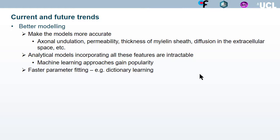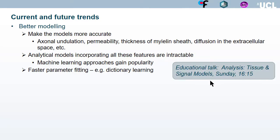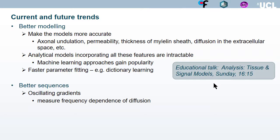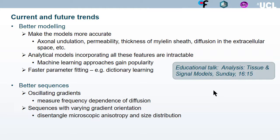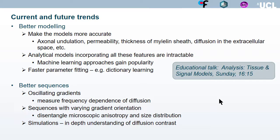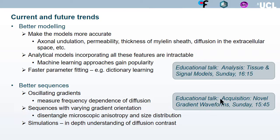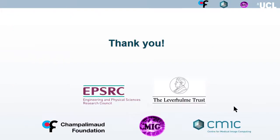We also want to fit parameters faster to bring these techniques to the clinic as soon as possible. There are ongoing efforts on better sequences such as oscillating gradients to measure the frequency and time dependence of diffusion, and sequences with varying gradient orientation to improve specificity and disentangle microscopic anisotropy and size distribution. Simulations provide in-depth understanding of diffusion contrast for different sequences and tissue models. Thank you very much for your attention.